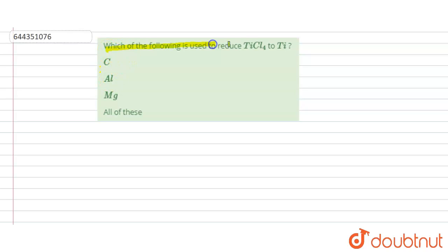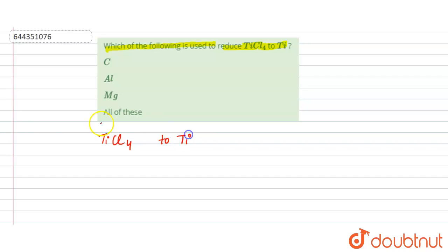The question is: which of the following is used to reduce TiCl₄ to Ti, that is titanium? So we have to see which element can reduce TiCl₄ to titanium. Reduce means there will be a decrease in the oxidation number.